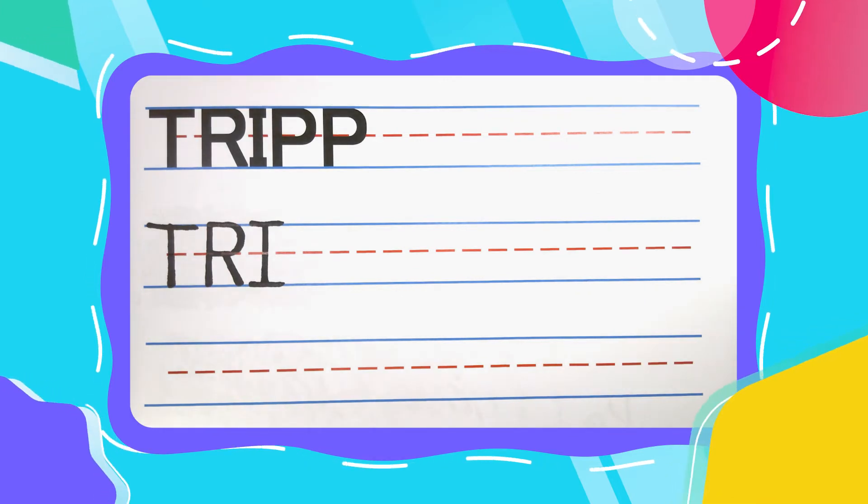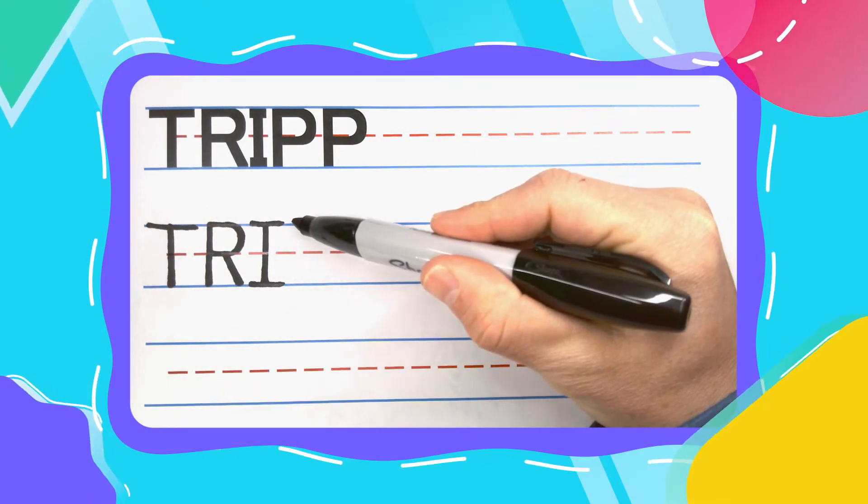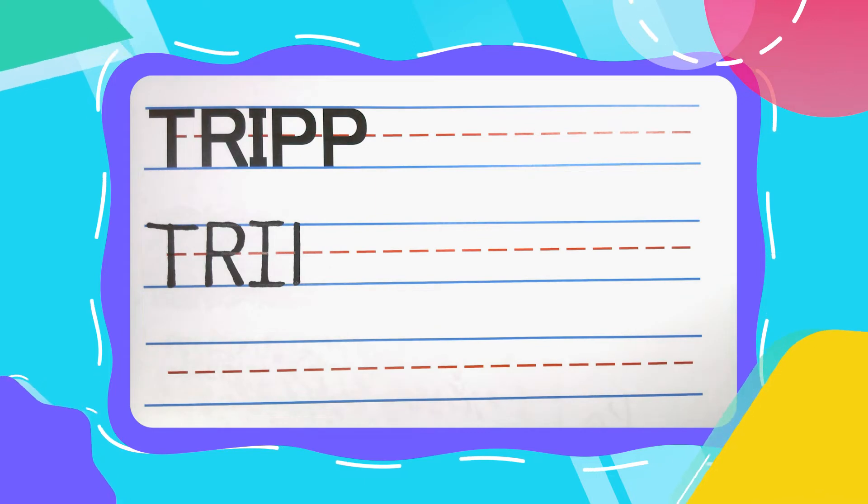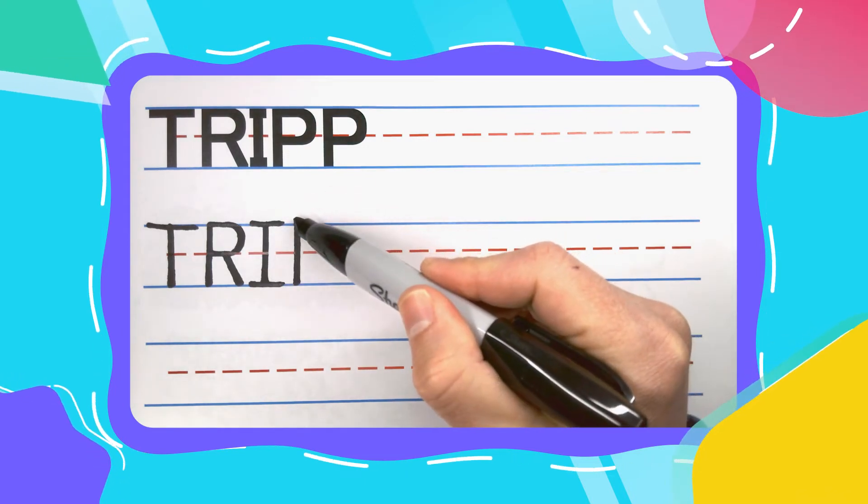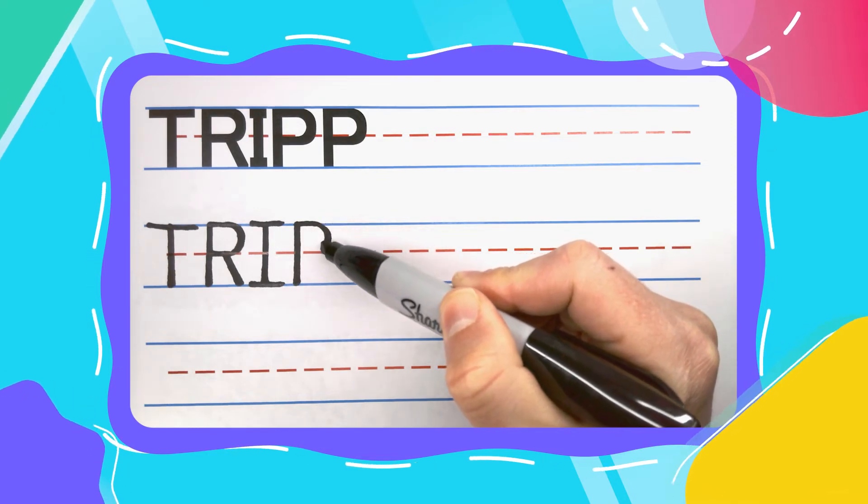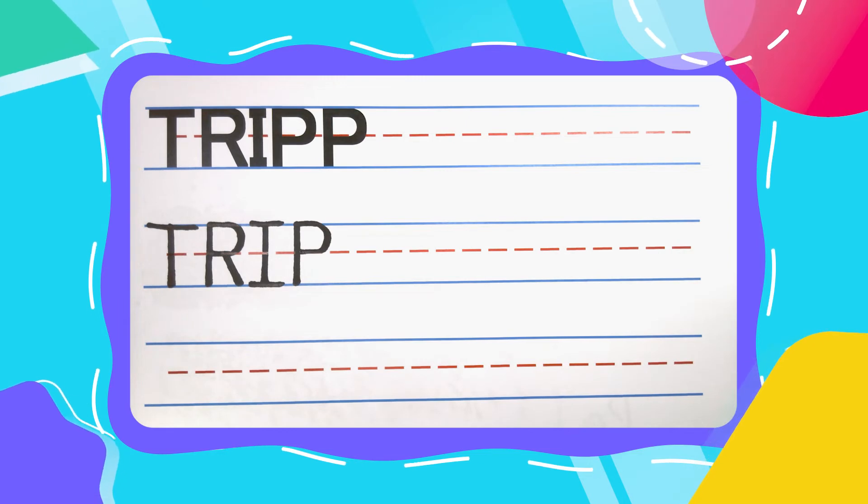We're now gonna draw two pesky P's back to back. Pesky P's start with a straight up and down line. Come back to the top and shoot out to the right just like your R, and then start to curve. Once you hit the middle, come straight back to the left. That's P number one.